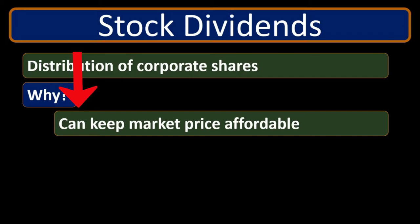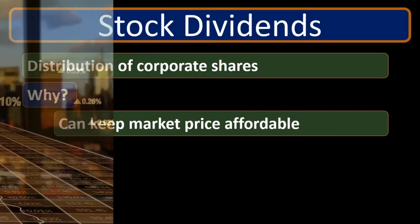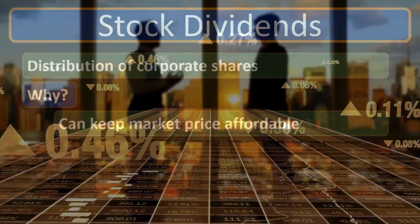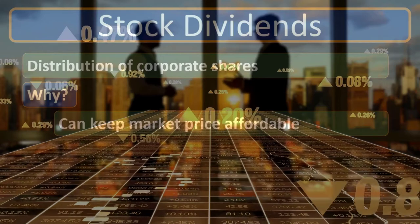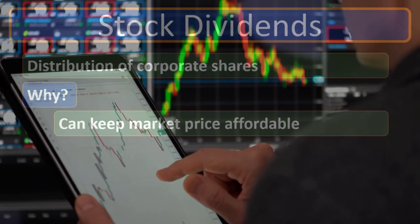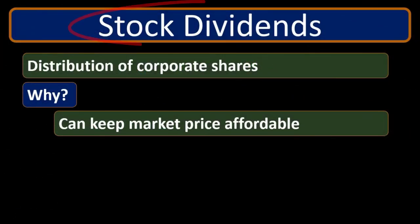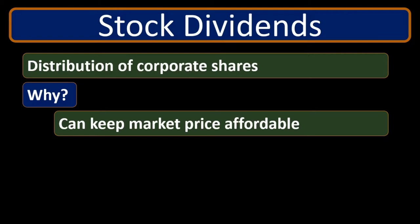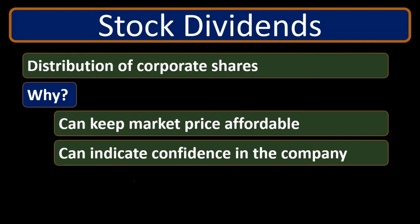One primary reason might be to keep the market price affordable. If stocks are selling on an exchange and the business grows and does better and better, the market price is going to go up if there's the same amount of shares out there. Giving a stock dividend would lower the stock price because there are more stocks out there, making the stock more affordable and keeping it in a range that people can purchase. It can also indicate confidence in the company.